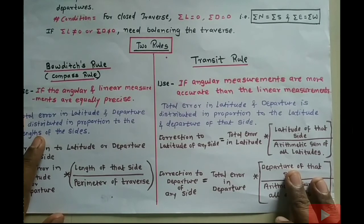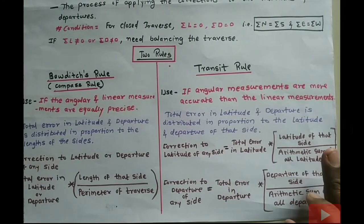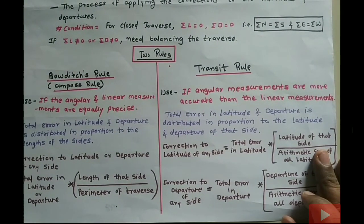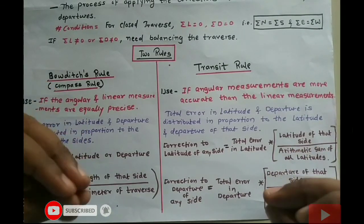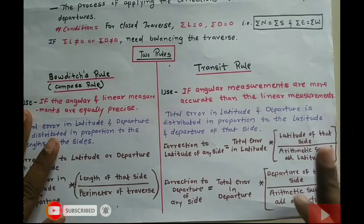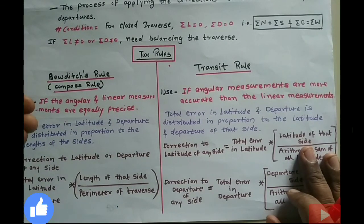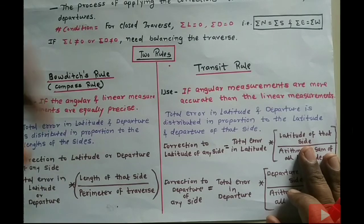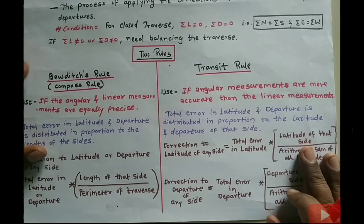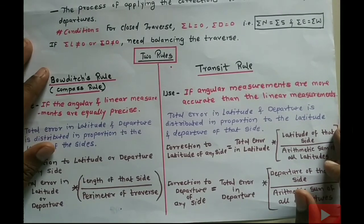In the next lecture we will see how to find corrections and calculate independent coordinates in Gale's traverse table. Gale's traverse table is a table in which we apply corrections, find independent coordinates, and calculate the area. See you in the next lecture.